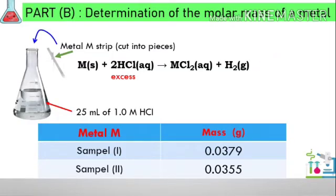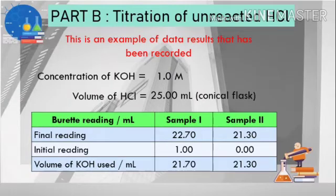From this equation, it shows that all the metal strip completely dissolved into the HCl, so the HCl now becomes the excess reagent while the metal is the limiting reagent. We are going to have two strips of metal M as sample one and sample two, each of them gives a different mass. For example, sample one gives 0.0379 gram and sample two gives 0.0355 gram.